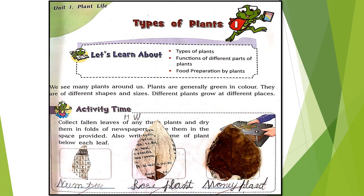This is the first page of types of plants, page number seven. They have given an activity: collect fallen leaves of any three plants and dry them in a fold of newspaper. For now, collect some fallen leaves — don't pluck the leaves. When school reopens we will do it in class.